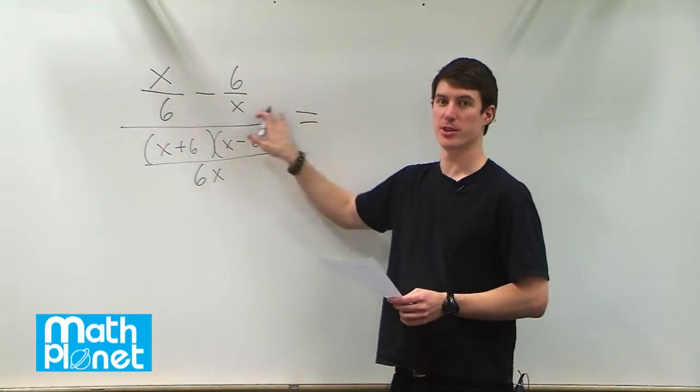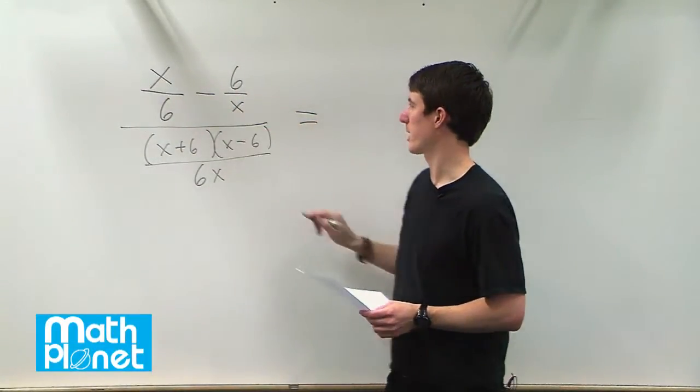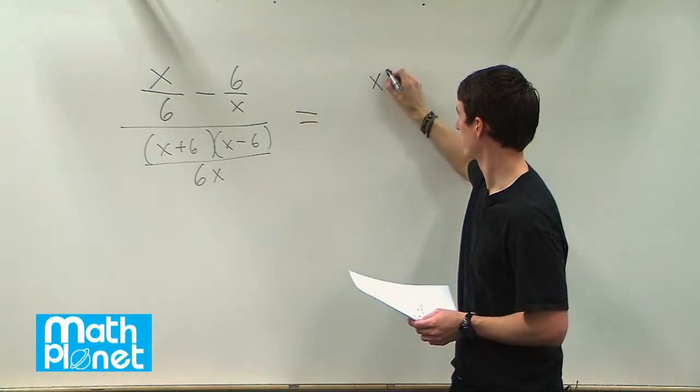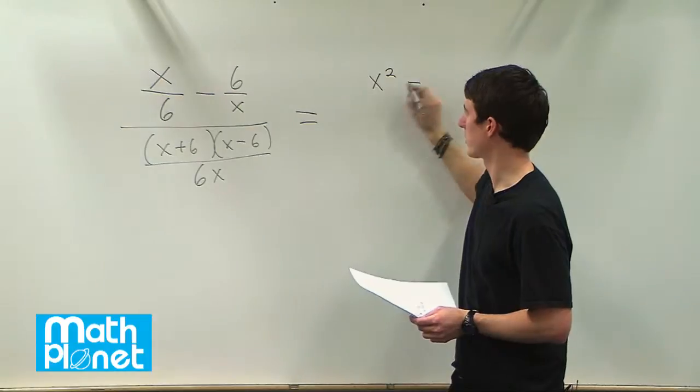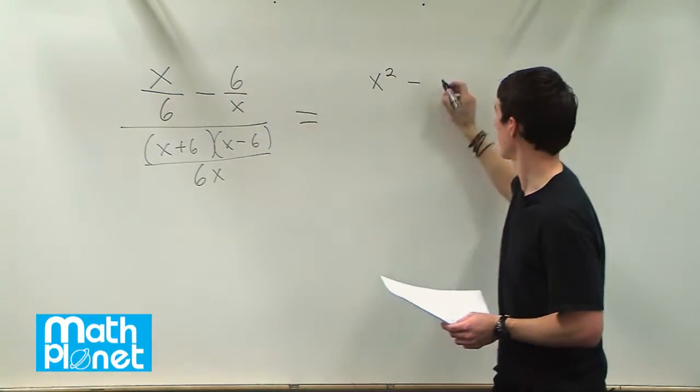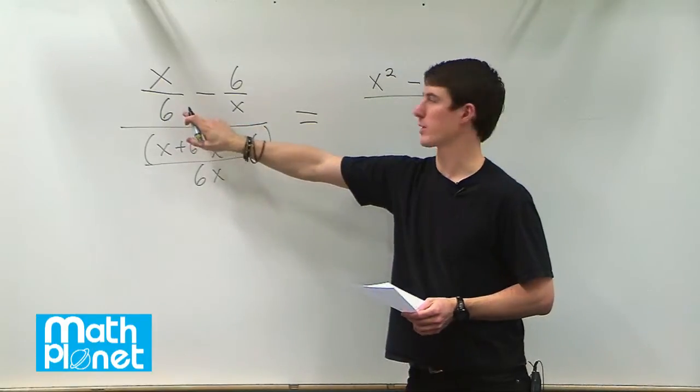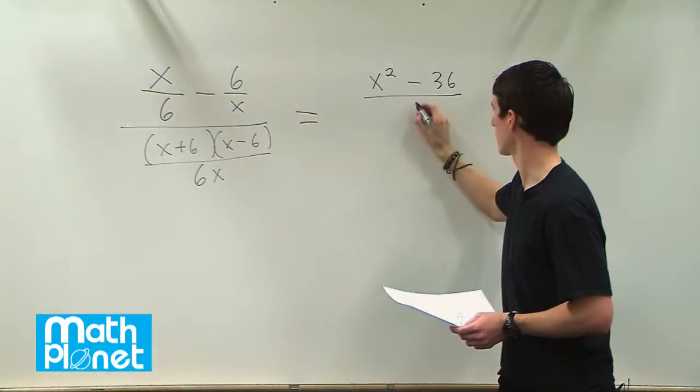So we can simplify the numerator here by using cross multiplication. This is going to give us x over x, which is x squared, minus 6 over 6 here, so 36. Over, then it's just cross multiplication would have given us 6 times x, so 6x.